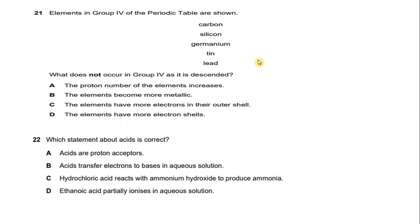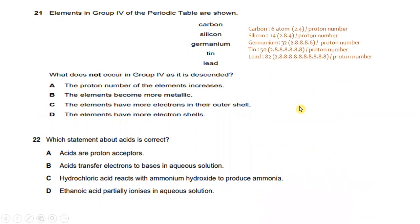Elements in Group 4 of the periodic table are shown: carbon, silicon, germanium, tin, and lead. Which property does not occur in Group 4 as it descends? Carbon has proton number 6, silicon 14, germanium 32, tin 50, and lead 82. What does not occur in Group 4 is that the elements have more electrons in their outer shell.